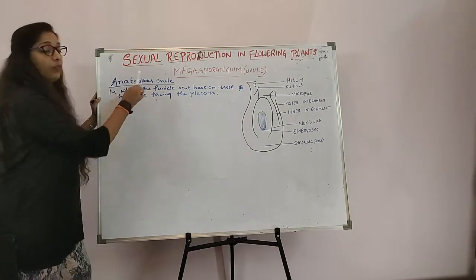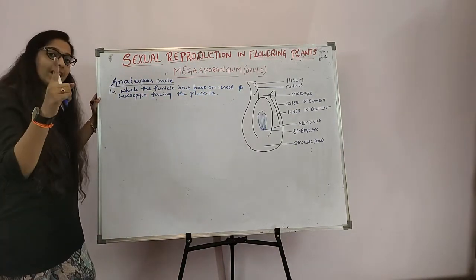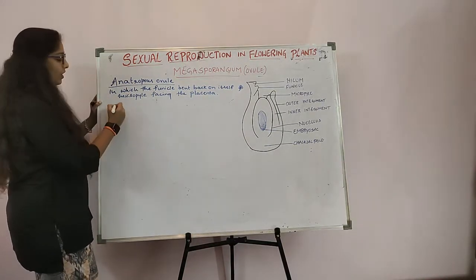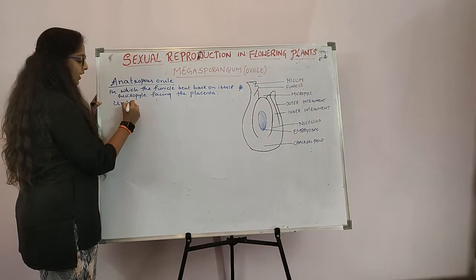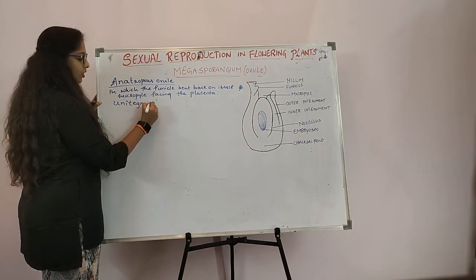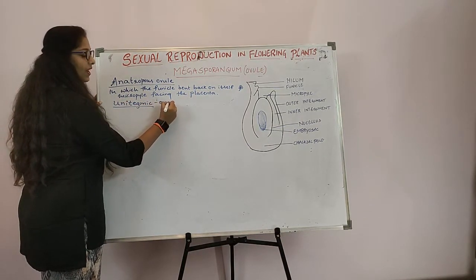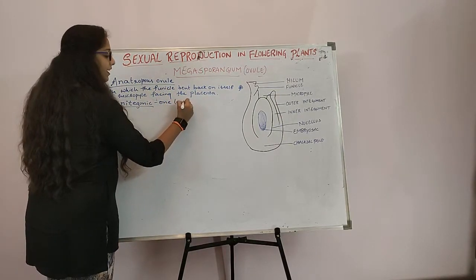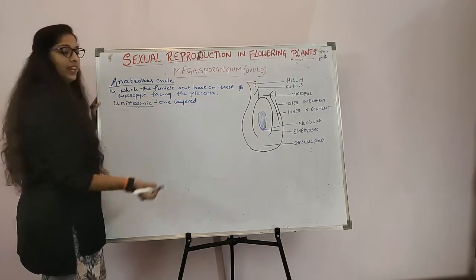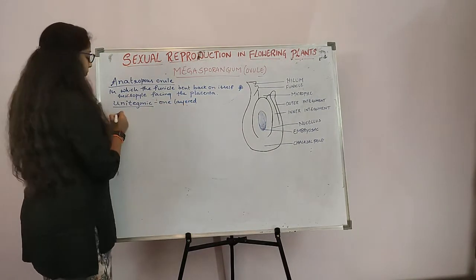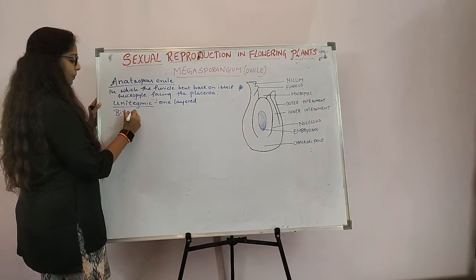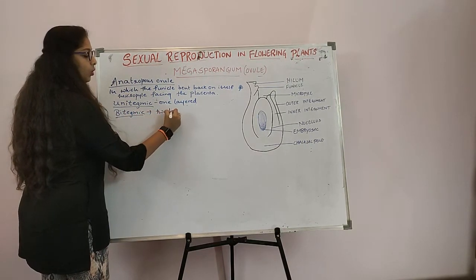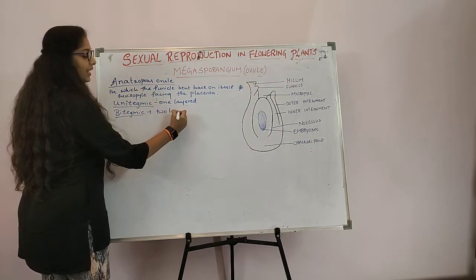This ovule may have one layer or two layers. If it has one layer, we call it Unitegmic — 'uni' means one and 'tegmic' means layer. Or it may be Bitegmic, meaning two layers.